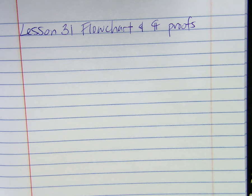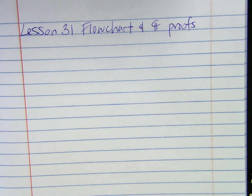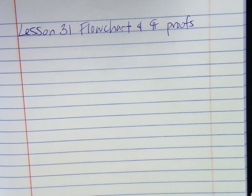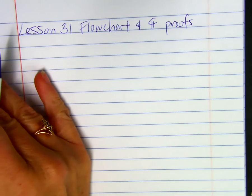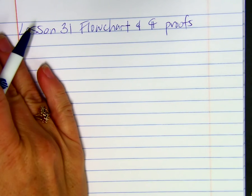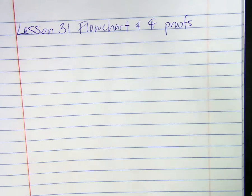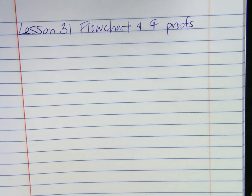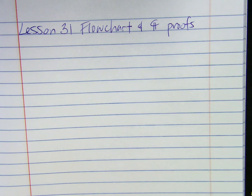In some two-column proofs, they'll give you two sides are congruent and then two other sides are congruent, and then based on that you can do this next step. So you just put it in boxes and have it flow. The steps go inside the boxes and the justifications go outside, in the little bottom right corner.